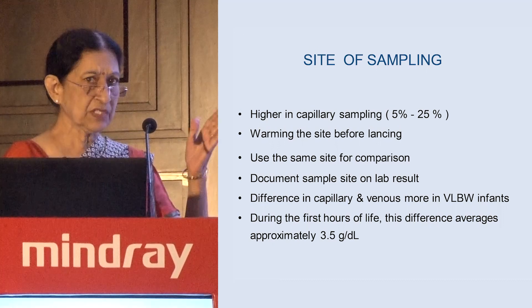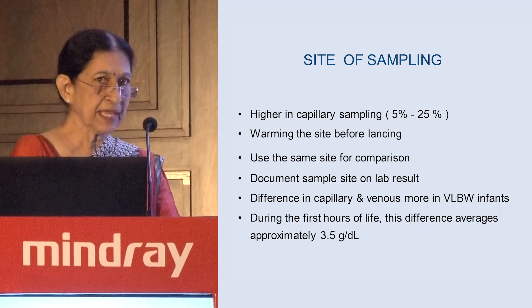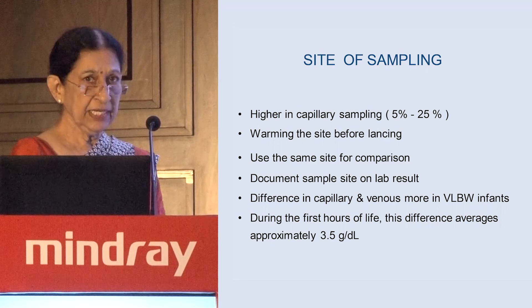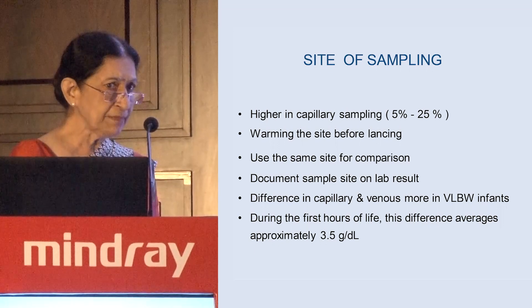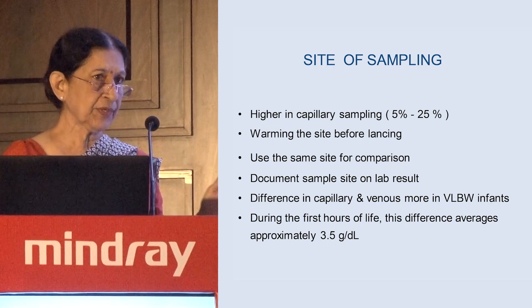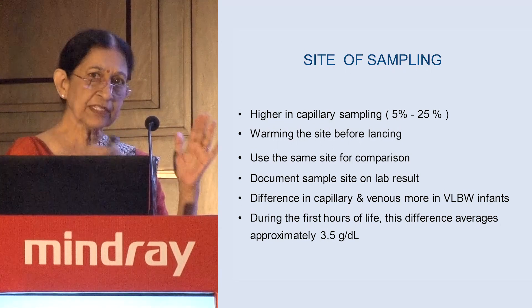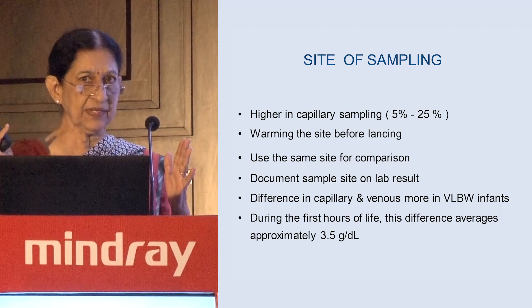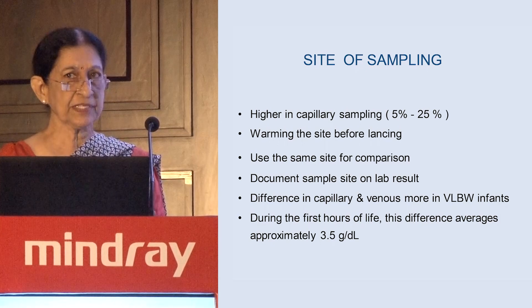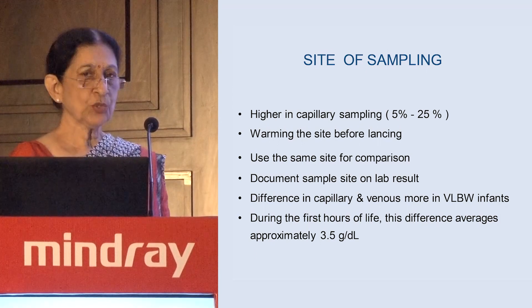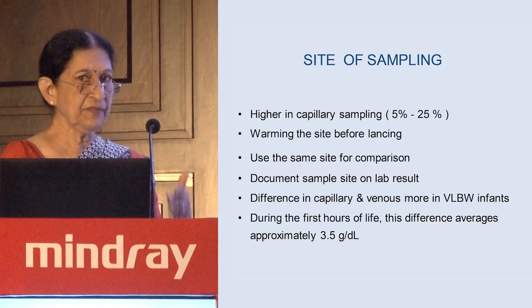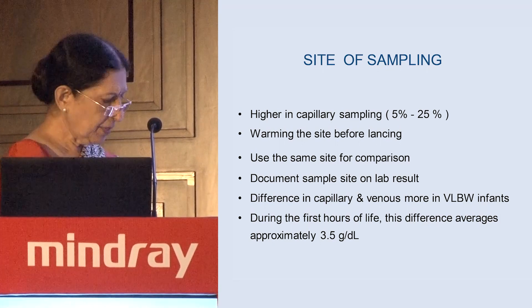The difference between capillary and venous is more pronounced in very low birth weight babies. During the first hours, this difference may go up to 3.5 grams of hemoglobin. If today you took a venous sample at 11 grams and yesterday the heel prick was 14 grams, you should not conclude that hemoglobin has fallen. Two different sites of sampling should not be compared, especially in neonates and most especially in very sick, very low birth weight babies.